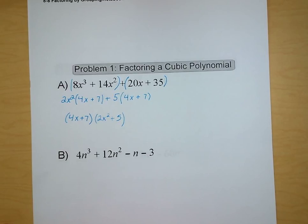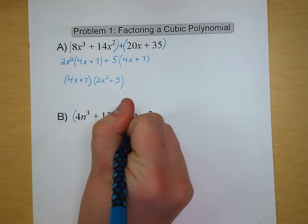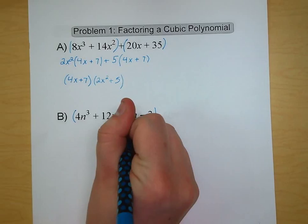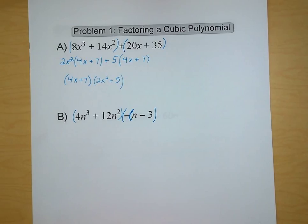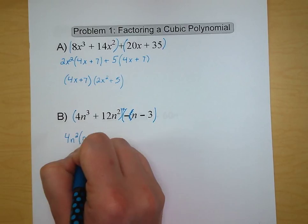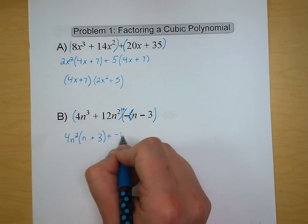Now we're going to follow the same process on letter B. We have parentheses around the 4n cubed and the 12n squared, and we're going to put parentheses around the negative n minus 3, with a plus sign in between those two parentheses. This is so we can be a little clearer on where we're pulling negative signs from. In our first term we've got 4n cubed plus 12n squared, so we can take out a 4n squared from that and we're left with n plus 3. From negative n and minus 3 I can factor out a negative 1, giving us n plus 3.